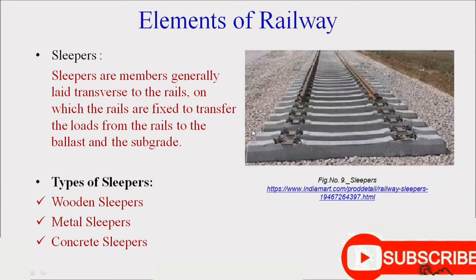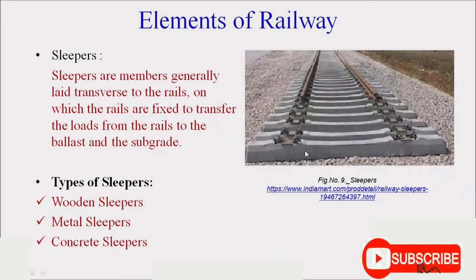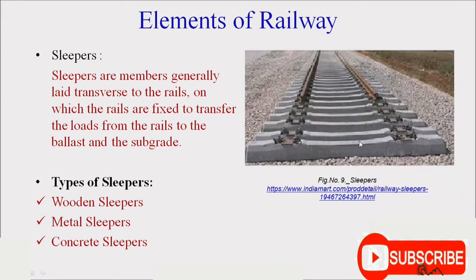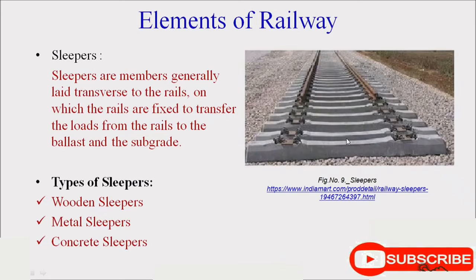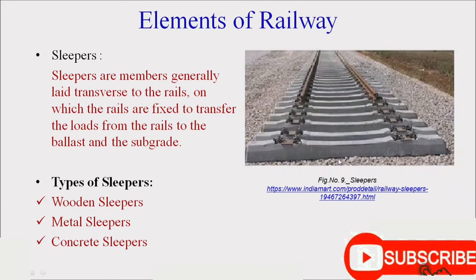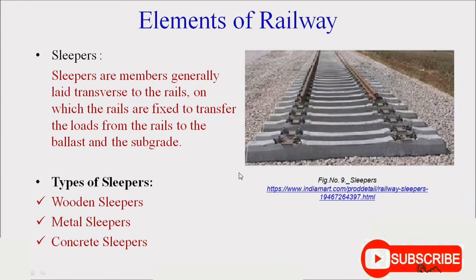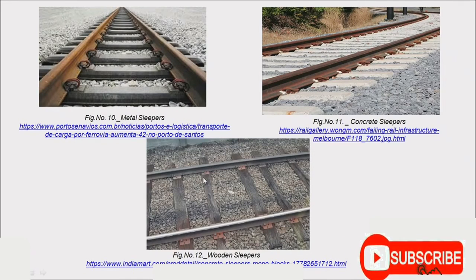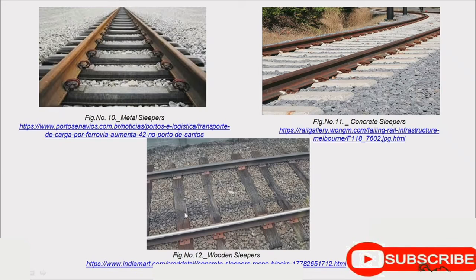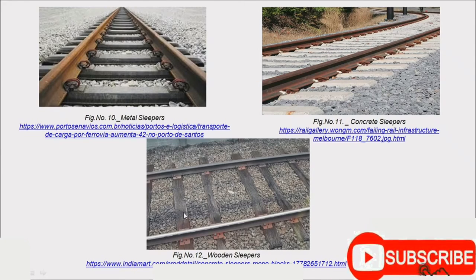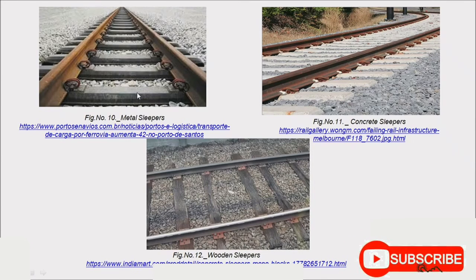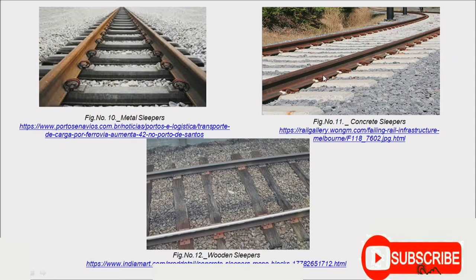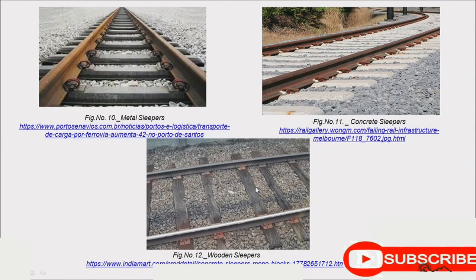The next part of the railway track is sleepers. Sleepers are horizontal members on which the rails are fixed to transfer the load from the train to the ballast and subgrade. There are different types of sleepers: wooden sleepers, metal sleepers, and concrete sleepers. Earlier, wooden sleepers were mostly used, but nowadays metal and concrete sleepers are used, as they provide more stability to the rail track than wooden sleepers.